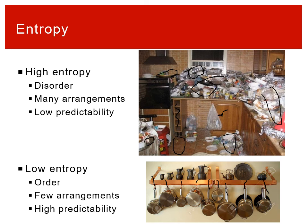You already have an inherent familiarity with what order and disorder mean. Entropy is just a way to quantify that — to assign a number. Double the entropy means double the disorder. It's all about counting arrangements: more arrangements and variety means more entropy, lower predictability, and together those things help us quantify disorder and give us a value for entropy.